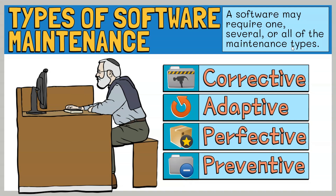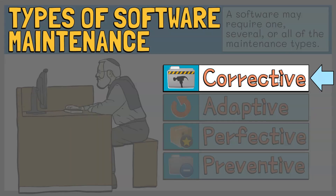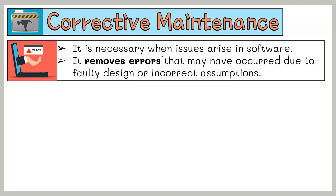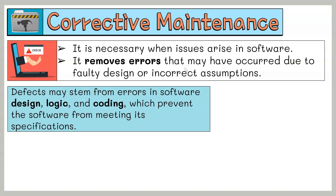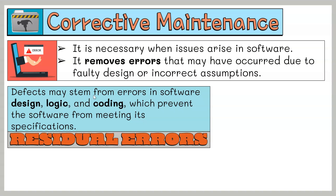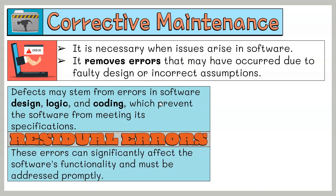Let's look closely at each type, beginning with corrective maintenance. Corrective maintenance is necessary when issues arise in software. This maintenance involves removing errors that may have occurred due to faulty design or incorrect assumptions. It focuses on fixing errors and faults in the operational system that can impact various parts of the software. Defects may stem from errors in software design, logic, and coding — known as residual errors — which prevent the software from meeting its specifications. These errors can significantly affect the software's functionality and must be addressed promptly.